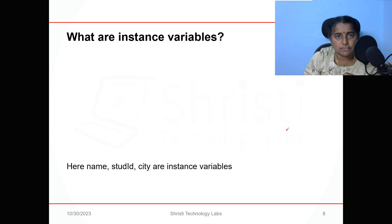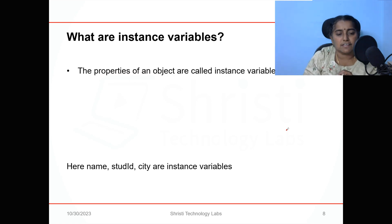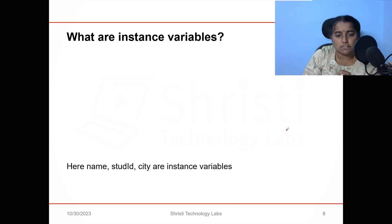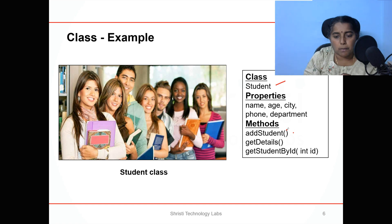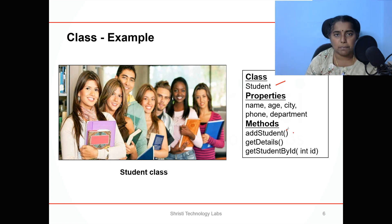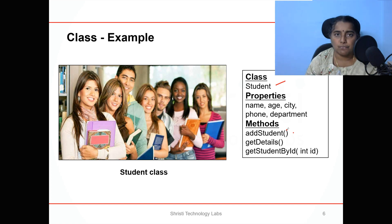What are instance variables? The properties that belong to an object are called instance variables. They take the default value of that particular data type. In the student class, the properties you see are nothing but instance variables. In case of name, city, and department — they are of type String, so the default value will be null. In case of age, it is integer, so the value will be zero. In case of phone, it is long, so the value will be zero.